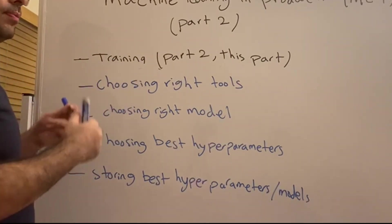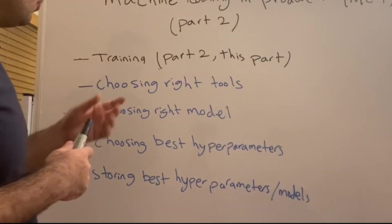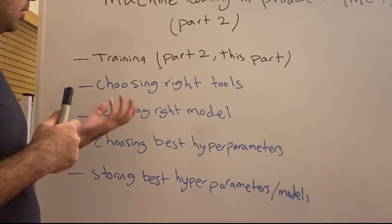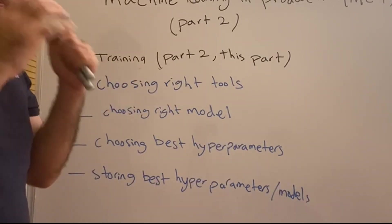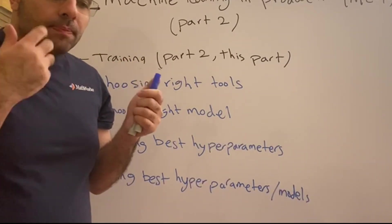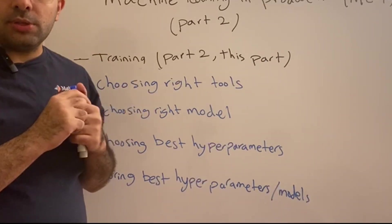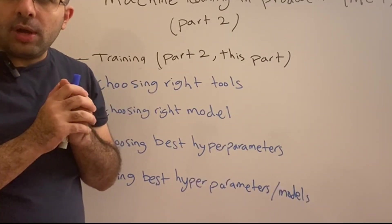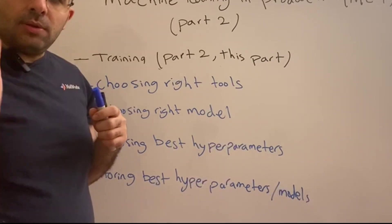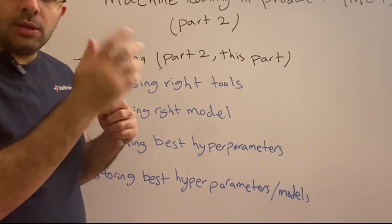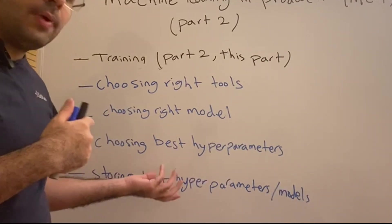In order to train a machine learning model and deploy it to production correctly, you need to consider four very important questions. One: what is the right tool for my model? Two: what's the right model? Three: how can I choose the best hyperparameters? Four: where do I store them? In the production environment at large scale, you are not going to train and test at the same time. There might be a failure in training, or you want to do training and testing at different points in time — so there must be a way to store the hyperparameters.